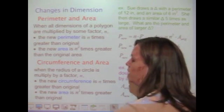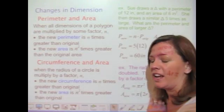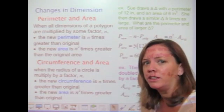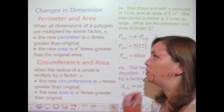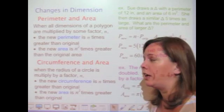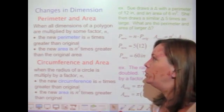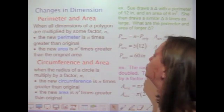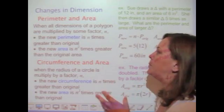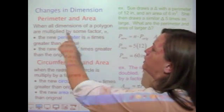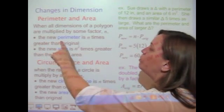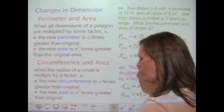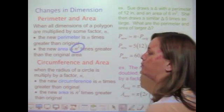The last thing I want to talk about is changes in dimension — a very common topic on every released AIMS item and standardized state test I've seen. When all the dimensions of a polygon are multiplied by some factor n, the new perimeter is going to be n times greater than the original. The new area, however, will be n² times greater than the original.